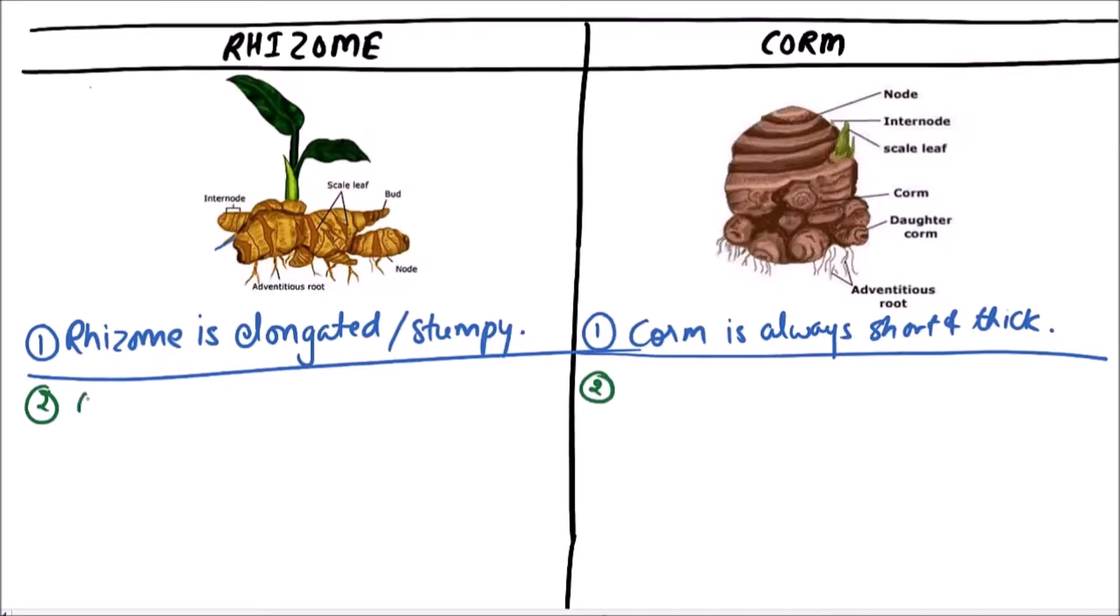Rhizome is often branched, while a corm is unbranched.